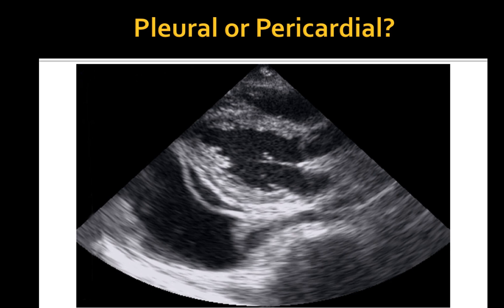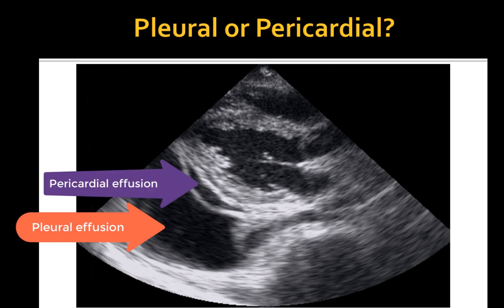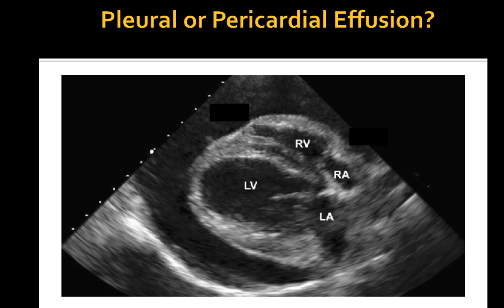This patient has both pleural and pericardial effusions; however, pleural effusion predominates and only a small amount of pericardial effusion is present. To differentiate between the two, it is important to identify the bright echogenic pericardial sac, which usually has a circular shape surrounding the heart.